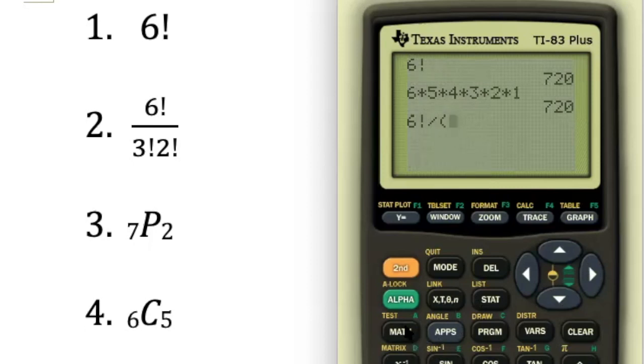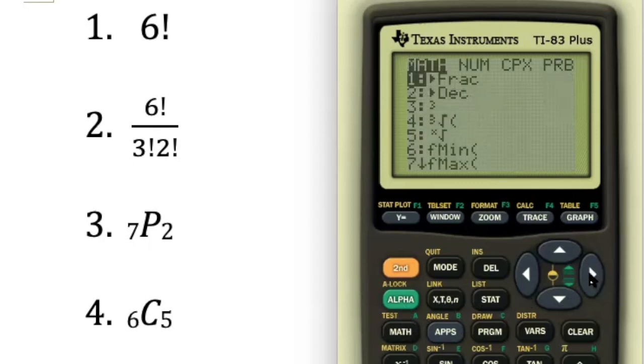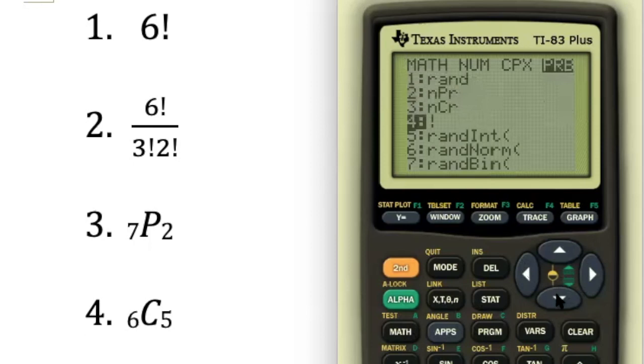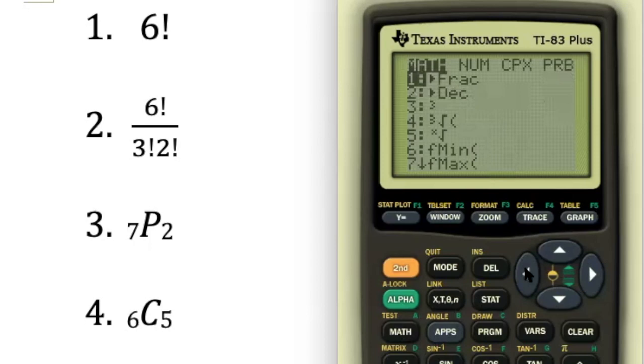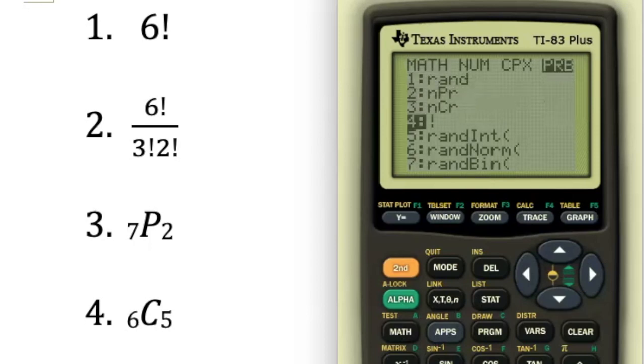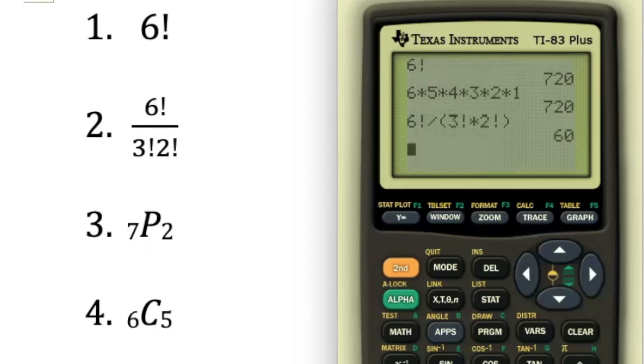I'm going to put parentheses, 3 factorial times 2, and go get another factorial symbol. Close it up and hit enter. 60 is the correct answer.